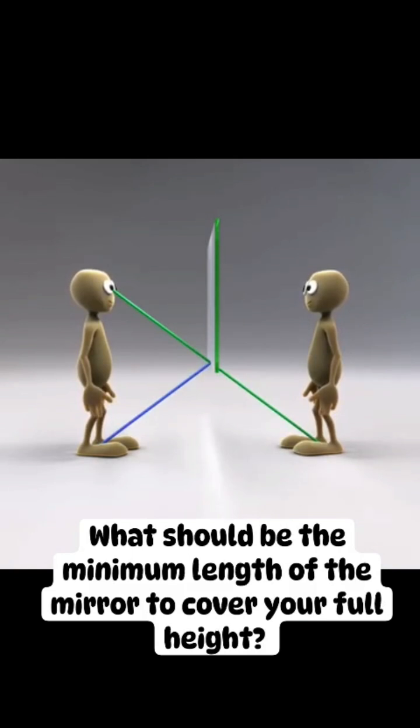We can do the same for the top of your head. Tracing a line from your eyes to where the top of your head appears in the reflection, we find the location on the mirror that is showing you the top of your reflection. We wouldn't need any part of the mirror above that point.